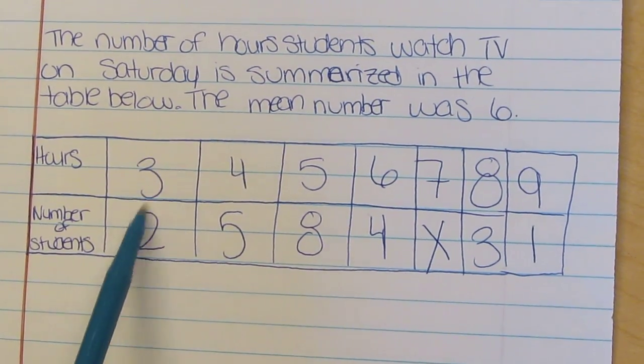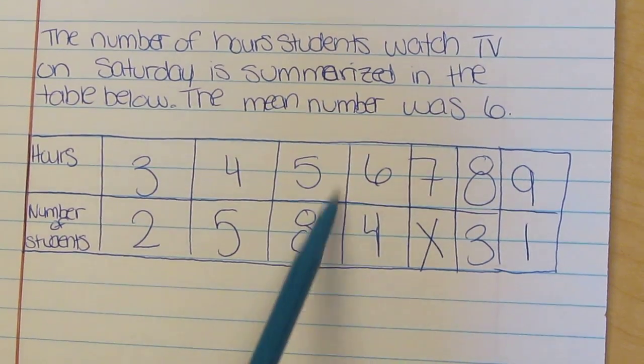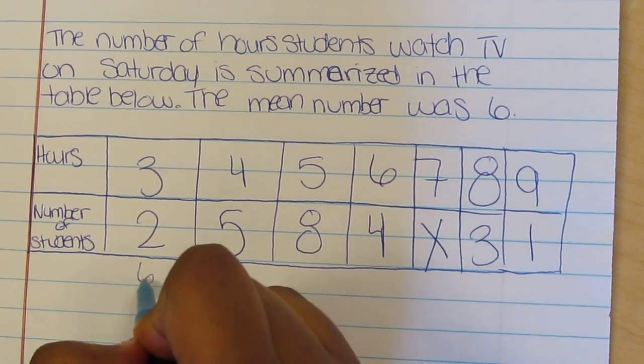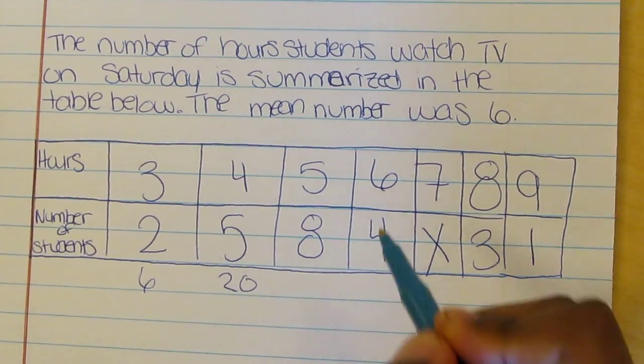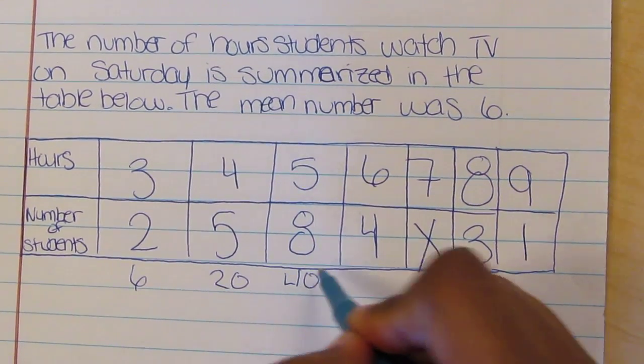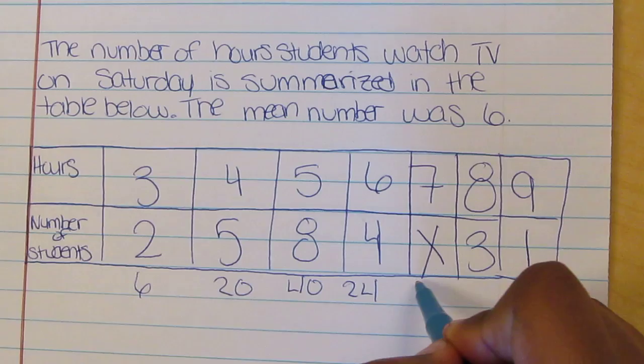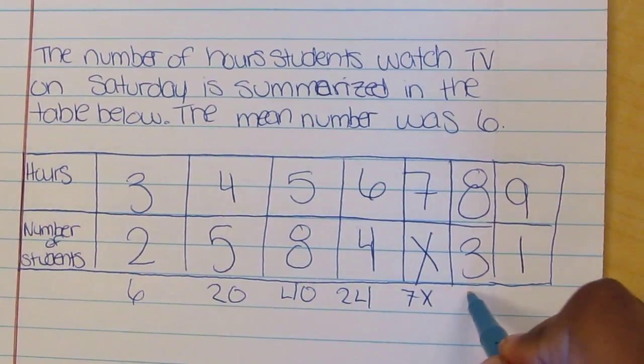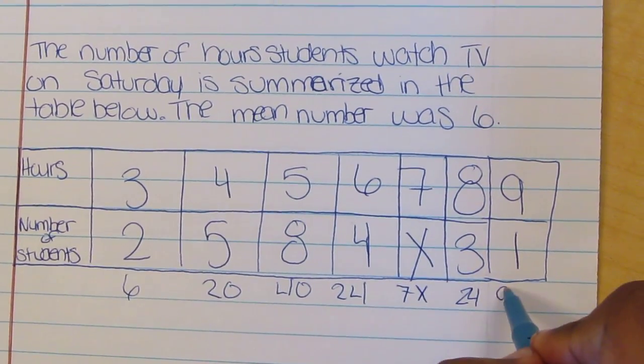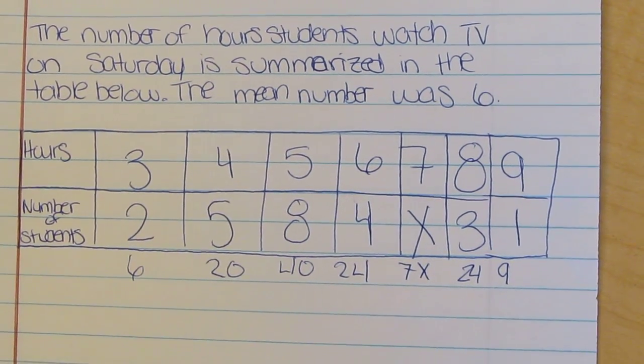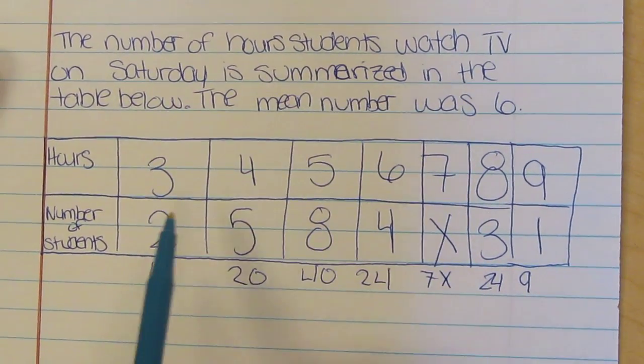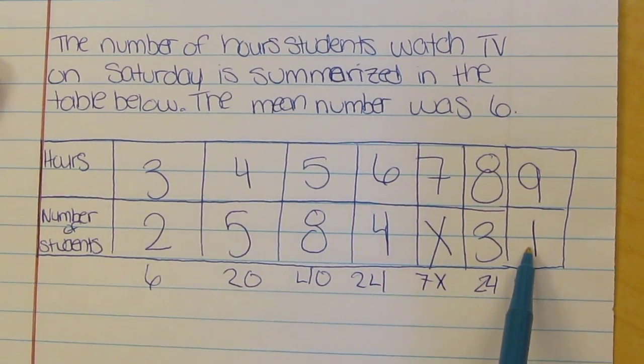First we will multiply these numbers. This would be 6, this would be 20, this would be 40, this would be 24, 7X, 24, and 9. After you get those numbers, you add these up.